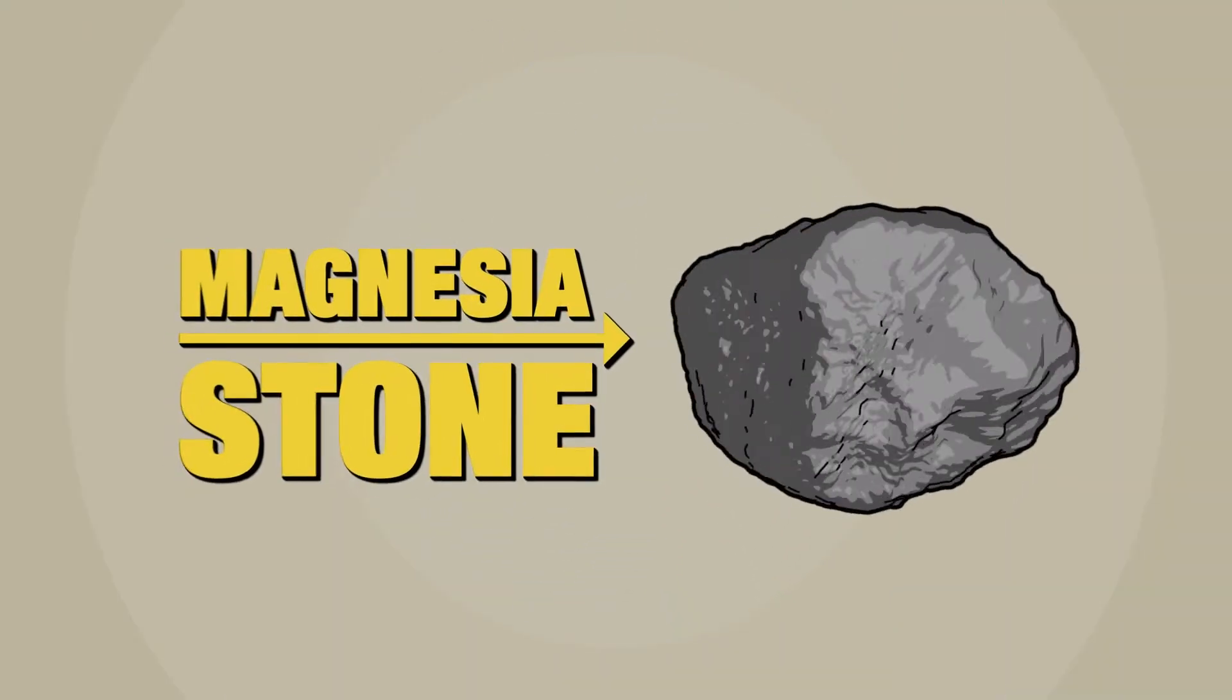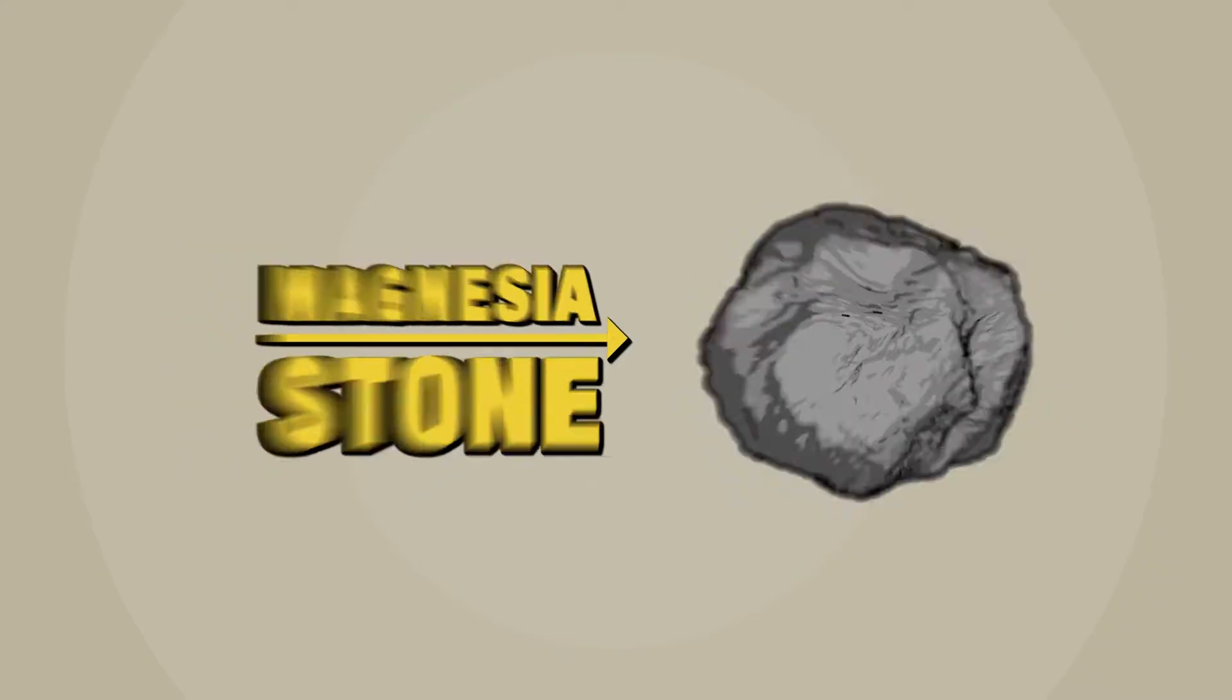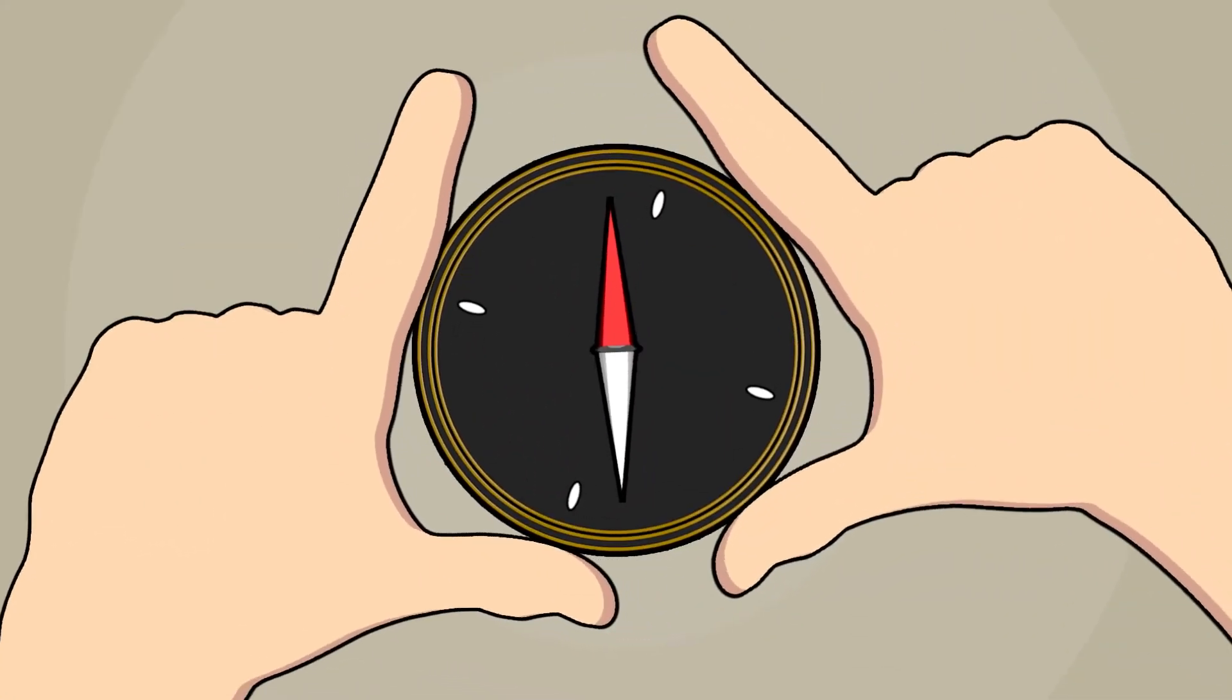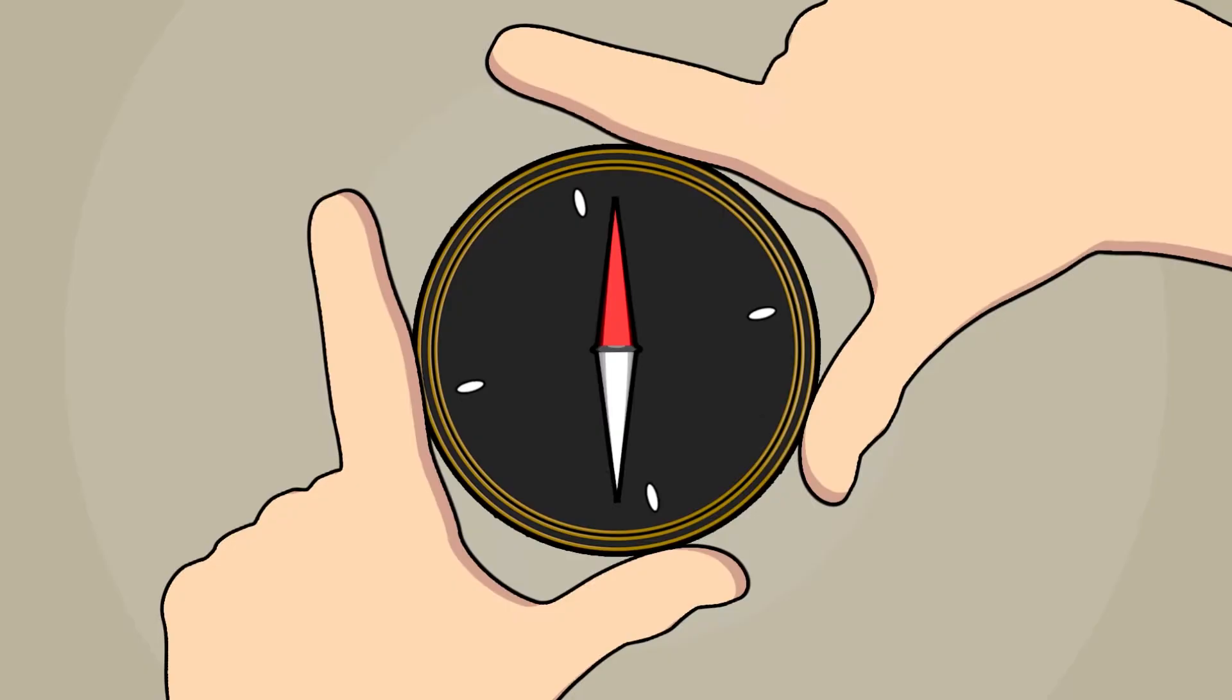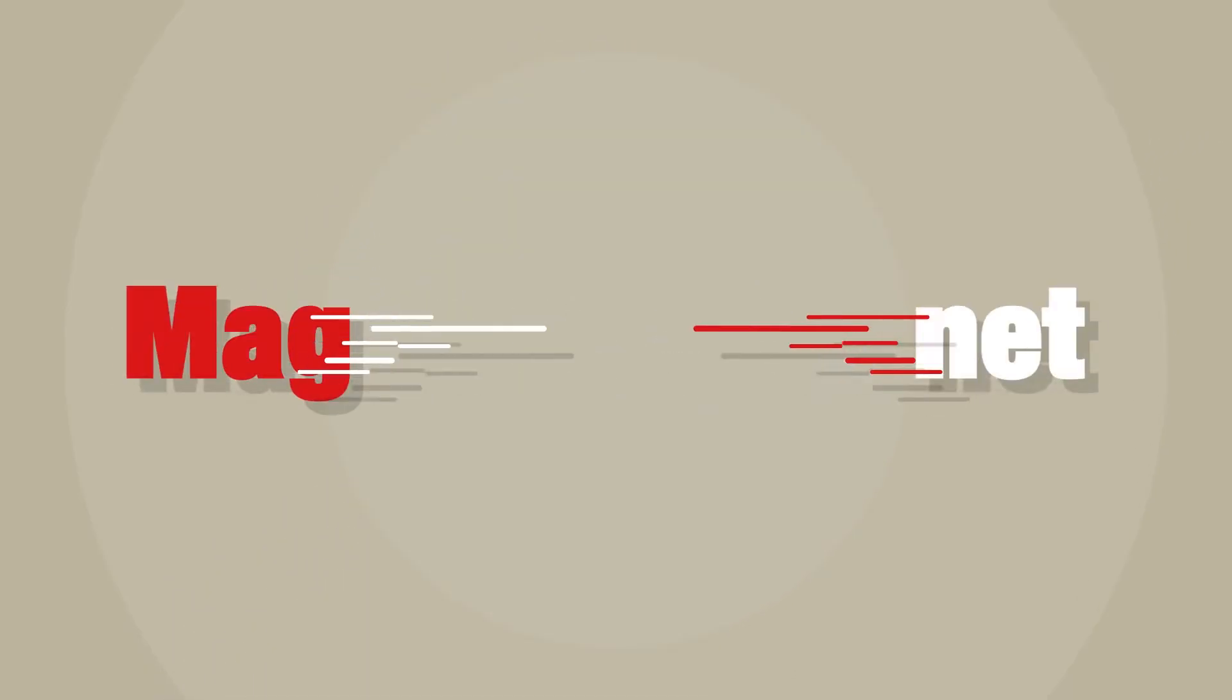We also know magnets like this magnesia stone, natural iron oxide, which orients at the surface of the earth in the needle of the compass, but we make no connection between electric charge and magnet.